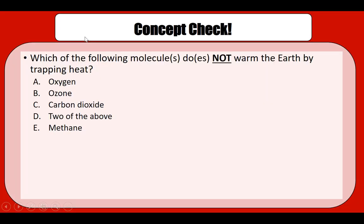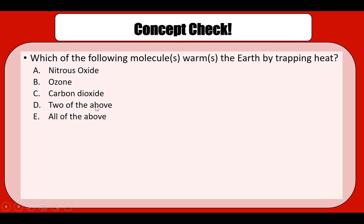Let's do a quick concept check: which of the following molecules does not warm the earth by trapping heat? The answer is oxygen — it's not trapping heat; ozone and carbon dioxide do. Another quick concept check: which of the following molecules warms the earth by trapping heat? The answer is all of the above, because nitrous oxide, ozone, and carbon dioxide are all greenhouse gases. That's a quick introduction to the greenhouse gas effect — thank you.